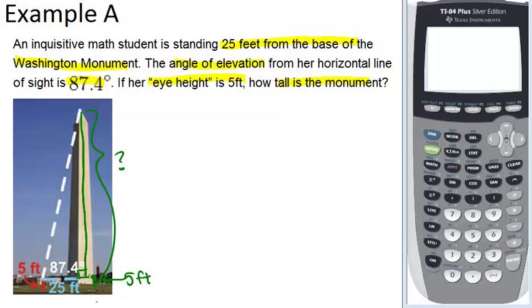We can see we have this picture already labeled with our 87.4 degree angle of elevation and 25 feet from the person to the monument. I'm going to redraw the triangle just so that we can see it a little bit easier.